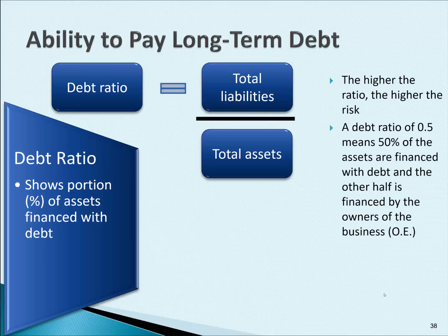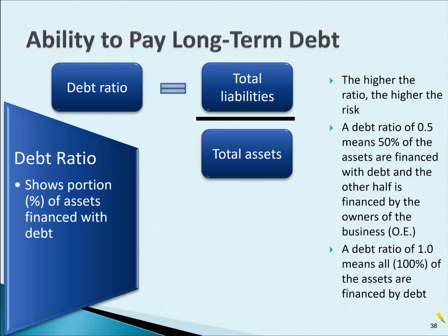So if you get a debt ratio of 0.5, that means 50% of the assets are financed with debt and the other half is financed by the owners of the business. Another way of saying that is half the assets would be owned by the owners and half are owned by others, such as creditors that gave the company a loan. A debt ratio of 1 means 100% of all the assets are financed by debt.